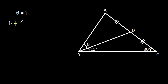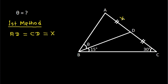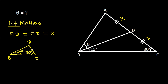The first method: we have AD equal to CD, suppose X. So AD is X and CD is X. The angle BCD equals angle CBD plus angle ACB, which is 15 degrees plus 30 degrees, giving us 45 degrees. So angle BCD is 45 degrees.